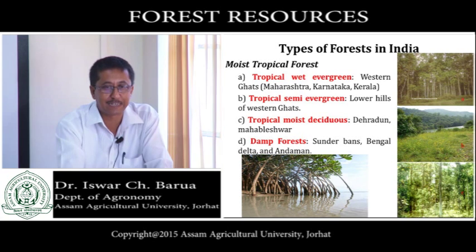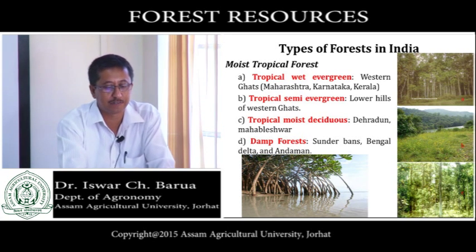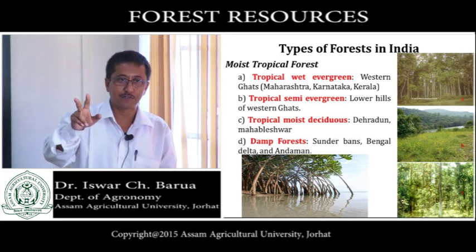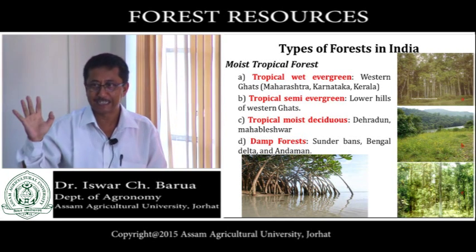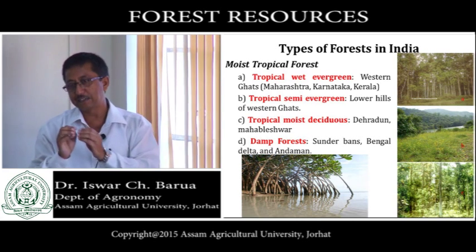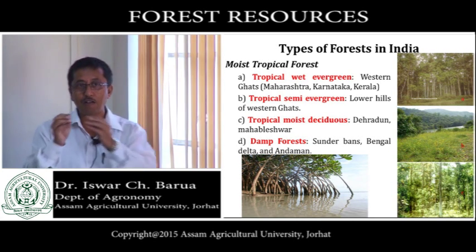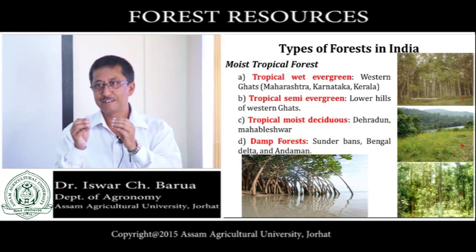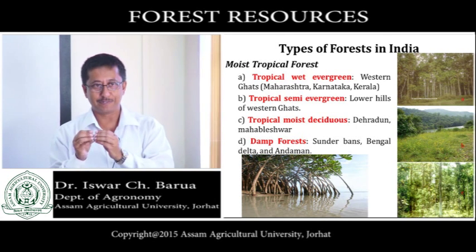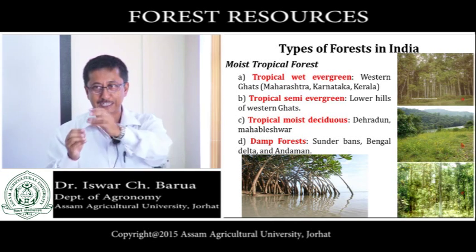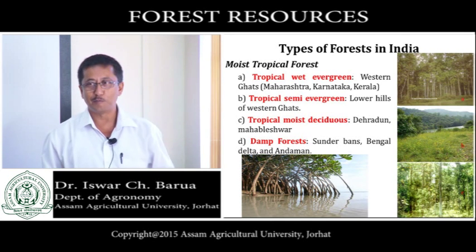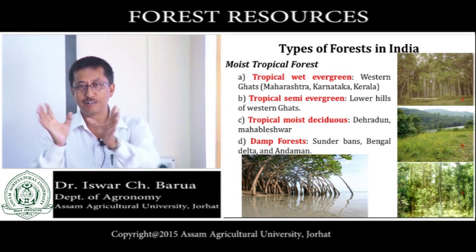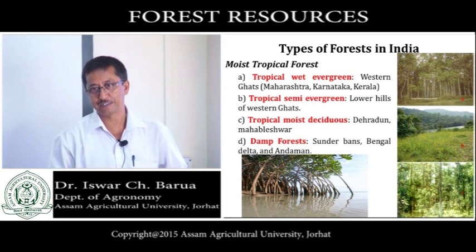The forest types include: tropical wet evergreen, tropical semi-evergreen, tropical moist deciduous, damp forest, and so on. We did not discuss all 16 types. My intention is to discuss how the words come together in the naming of forest types — where the words moist, deciduous, evergreen, mountain come from, as they are all accumulated to name a type of forest.